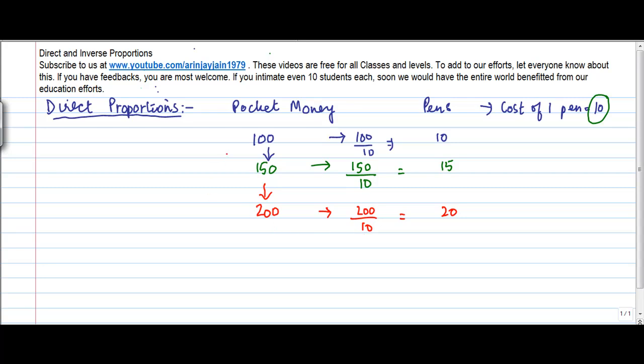Now, what we notice here is that as my pocket money increases, let's say from 100 to 150, the number of pens that I can buy also increase. Similarly, once this increased further from 150 to 200, the number of pens I bought increased from 15 to 20.